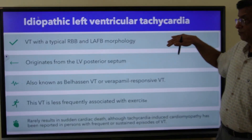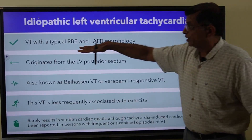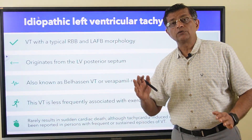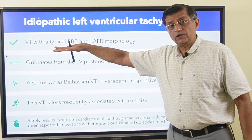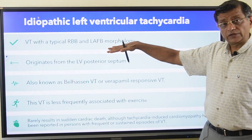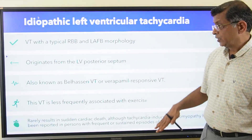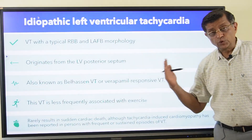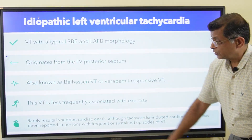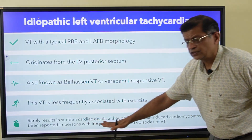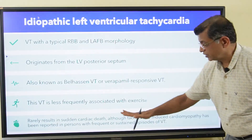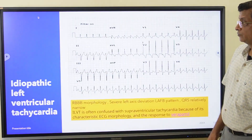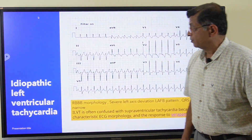The second condition is idiopathic left ventricular tachycardia — VT with typical RBBB and left anterior fascicular block morphology. Since the tachycardia originates from the left ventricle, morphology is RBBB type with significant left axis deviation. It originates from the left posterior septum and is also called Belhassen VT or verapamil-sensitive ventricular tachycardia. It is less frequently associated with exercise and rarely results in sudden cardiac death.